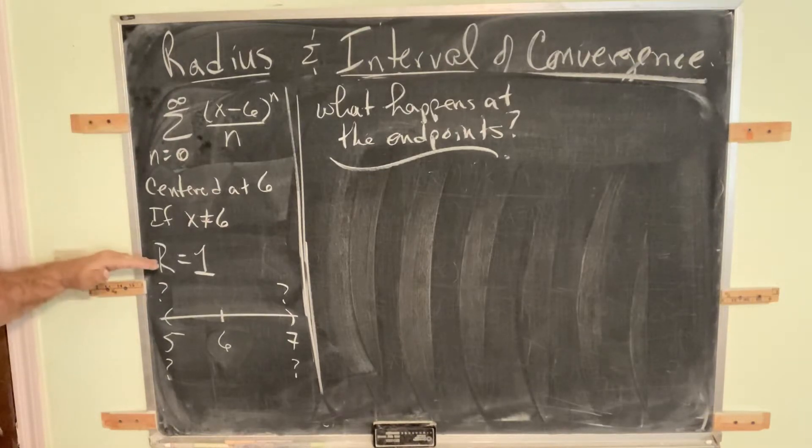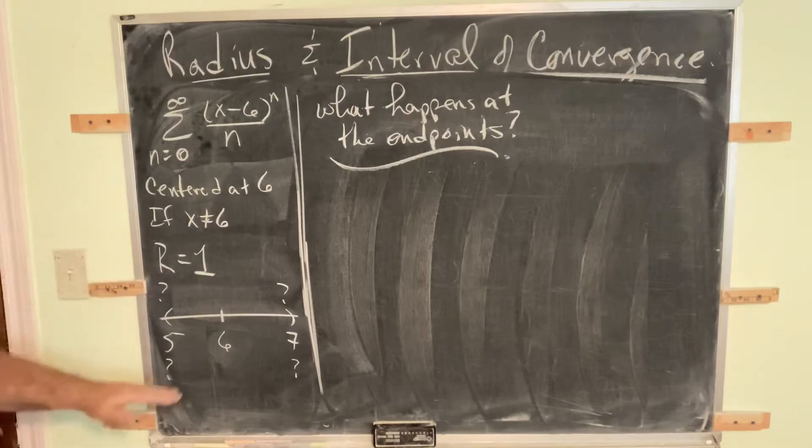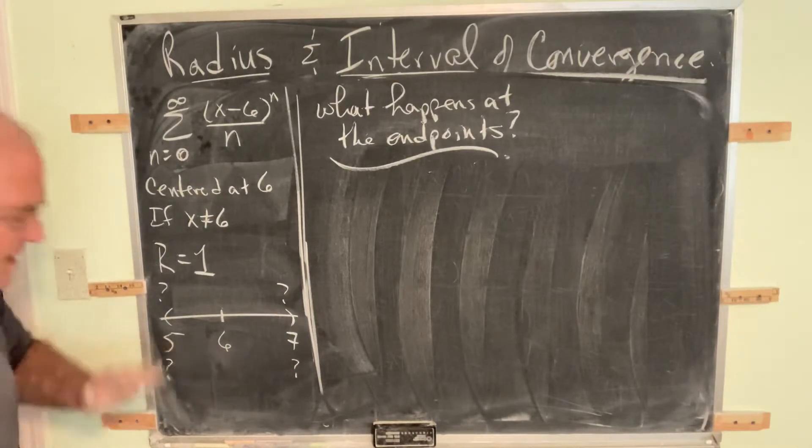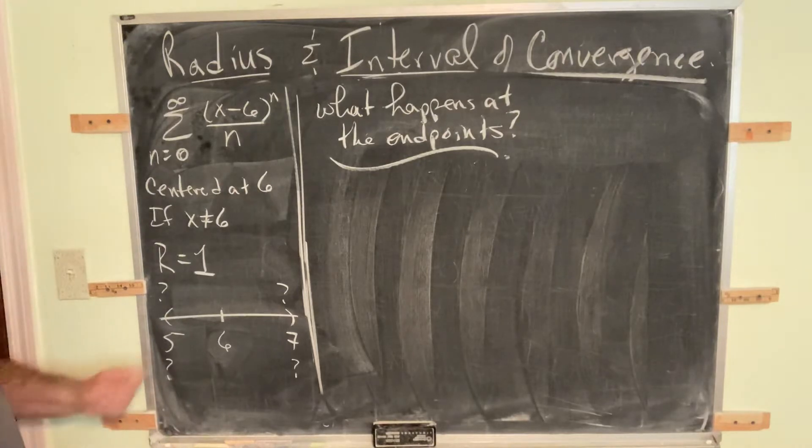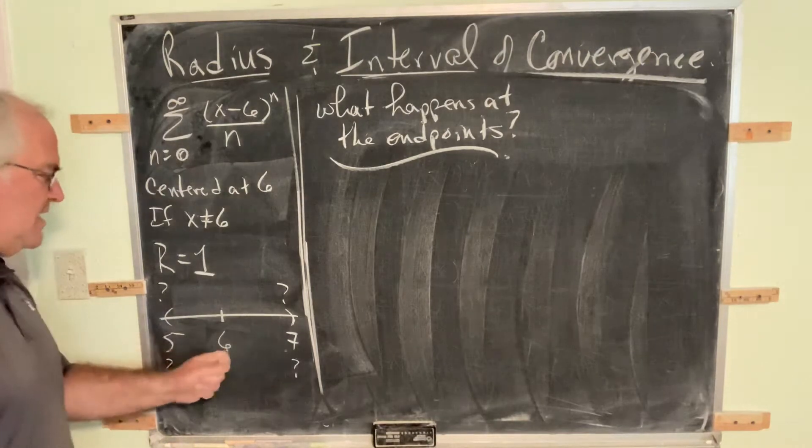We found the radius. The radius is 1. That's not going to change. And we found the basis, the foundation for the interval of convergence. It goes from 5 to 7, centered at 6.